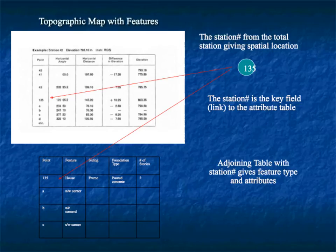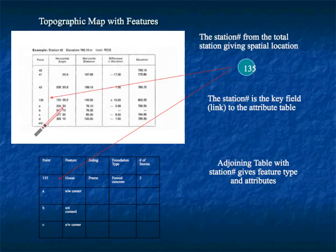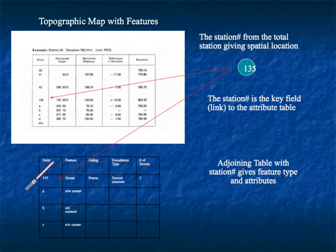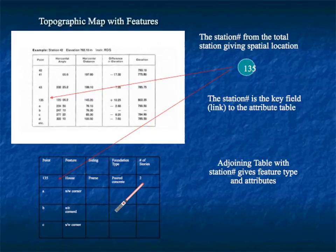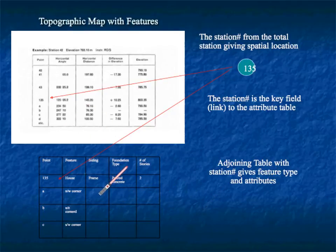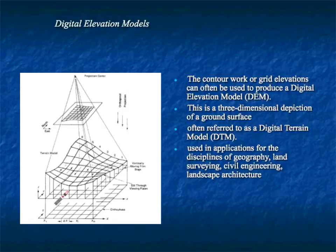When you combine data — for example, a feature like point 135 — it has actual coordinates, and in the GIS data that point is linked to an attribute table. The attribute data might say it's a house with a poured concrete foundation, framed, and two stories. This attribute data is linked to the location, and that's what makes a GIS system.